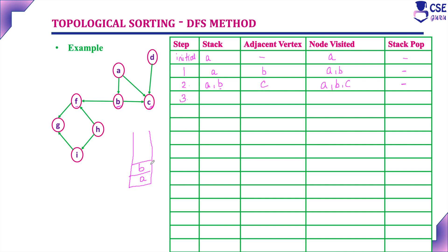After pushing C, the top element of the stack is C. We consider the adjacent vertices to C, but according to its direction we cannot reach any other vertices from C — no adjacent vertices. Stack content is A, B, C. C has reached a dead end, meaning we cannot reach any other vertices from C. So we pop C from the stack. The first vertex popped from the stack is C.